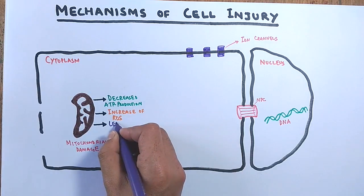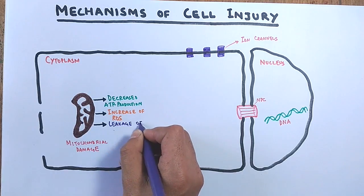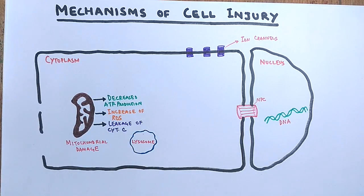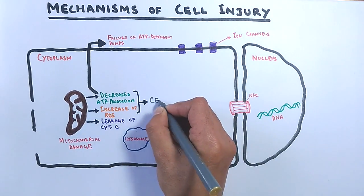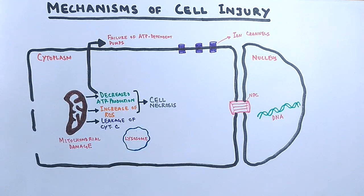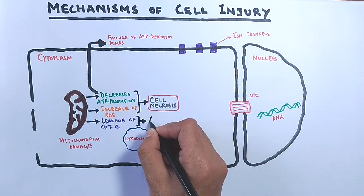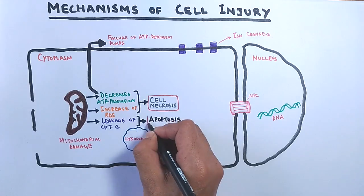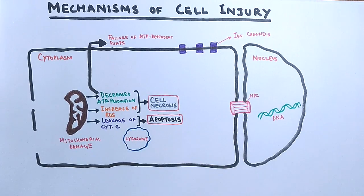Mitochondrial damage is also followed by leakage of cytochrome c. The first two events — decrease in ATP and increase in ROS — lead to cell necrosis, while leakage of cytochrome c leads to apoptosis. A detailed video on apoptosis and how cytochrome c aids in the process is linked in the description below.